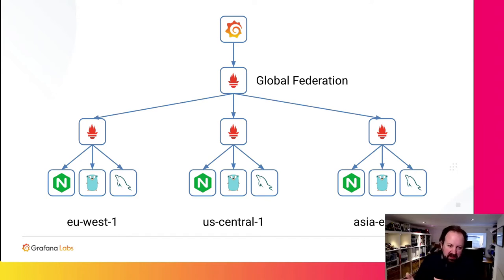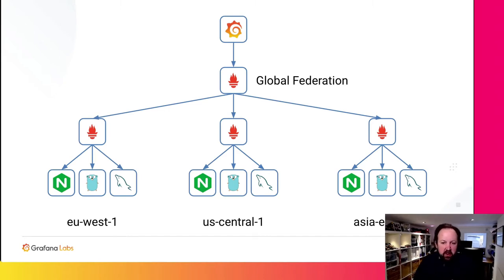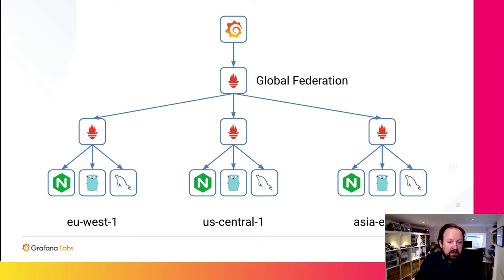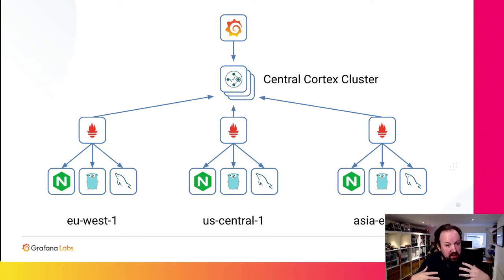We recommend as best practice that people only federate pre-aggregated data — commonly this might mean recording rules that have erased away the instance label. These are very useful for building dashboards, but it really prevents you from doing drill-down and ad hoc queries against this global federation server. If the federation server points to a problem in a region, it won't be able to point to a problem with a particular instance of a service because you've erased that label away. So about five years ago, we were looking for a different way of doing this — maybe a better way. And this is where we built Cortex.